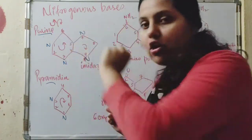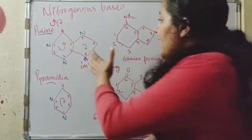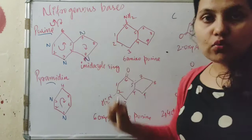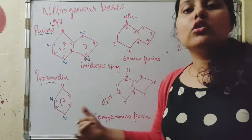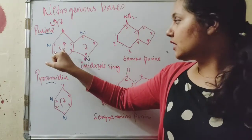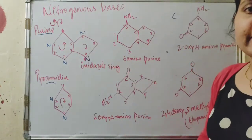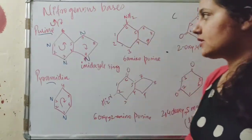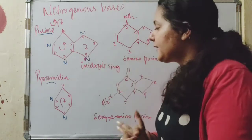The numbering in the main ring of the purine is anticlockwise — that is counterclockwise. The numbering in the imidazole ring is clockwise, and the numbering in the pyrimidine ring is also clockwise. Only the main ring of the purine is numbered anticlockwise.